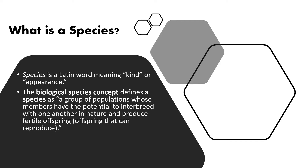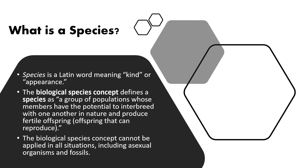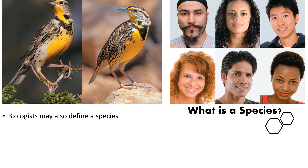Speciation involves two groups of organisms that can no longer interbreed with each other — too many changes have happened genetically or behaviorally. There are certain situations where we can't use the biological species concept: for asexual organisms like bacteria, which are very difficult to categorize because they're so similar yet evolve very quickly. We also can't use it with fossils, because they're no longer living and we can only tell so much from bones.